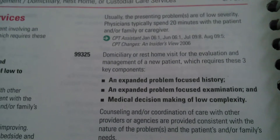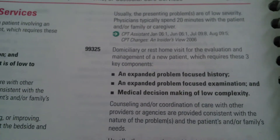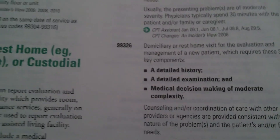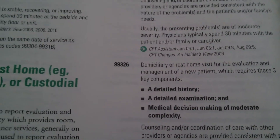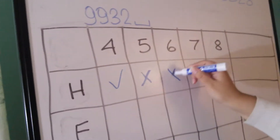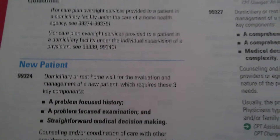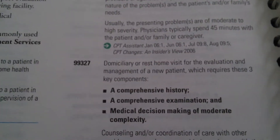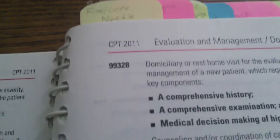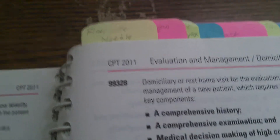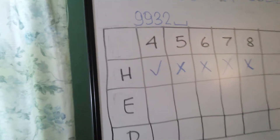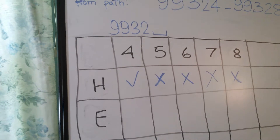For 99325, it says 'an expanded problem-focused history' — do we have that? No, it's just a problem-focused history, so number five gets an X. Number six requires 'a detailed history' — that's not a problem-focused history, so X. Number seven requires 'a comprehensive history' — we have a problem-focused history, so X. Number eight also requires 'a comprehensive history' — again, X.